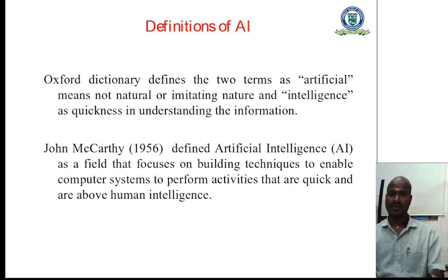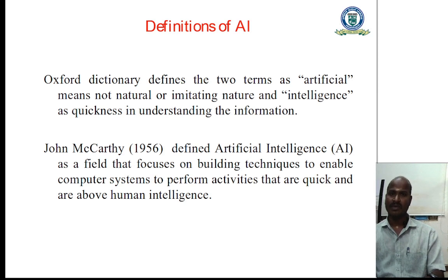Now we see the definitions of artificial intelligence. The Huxford Dictionary defines two terms. Artificial means not natural or imitating others, imitating nature. Intelligence means quickness in understanding the information. John McCarthy in 1956 defined artificial intelligence — he is the father of artificial intelligence.